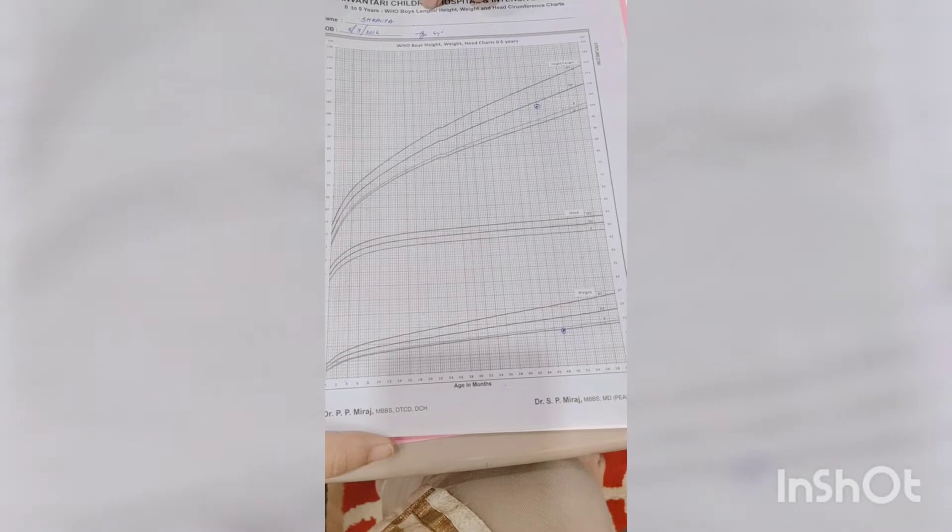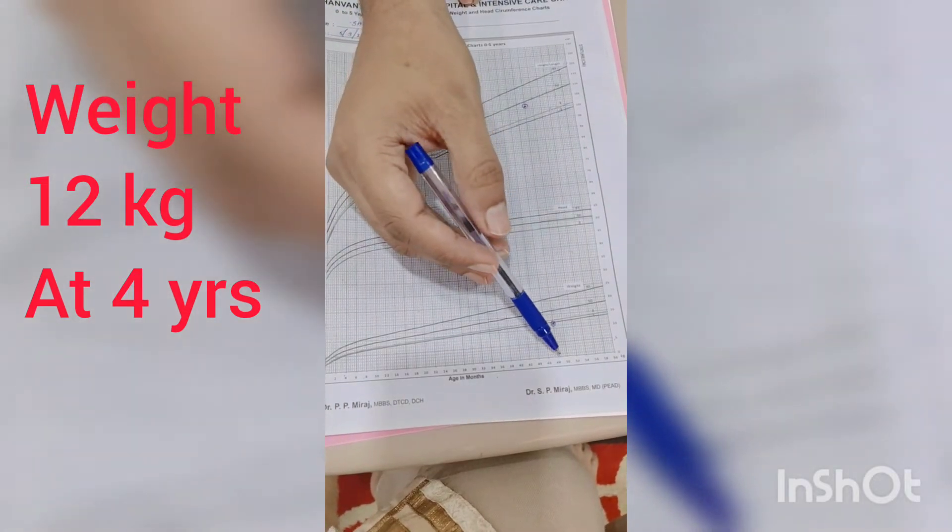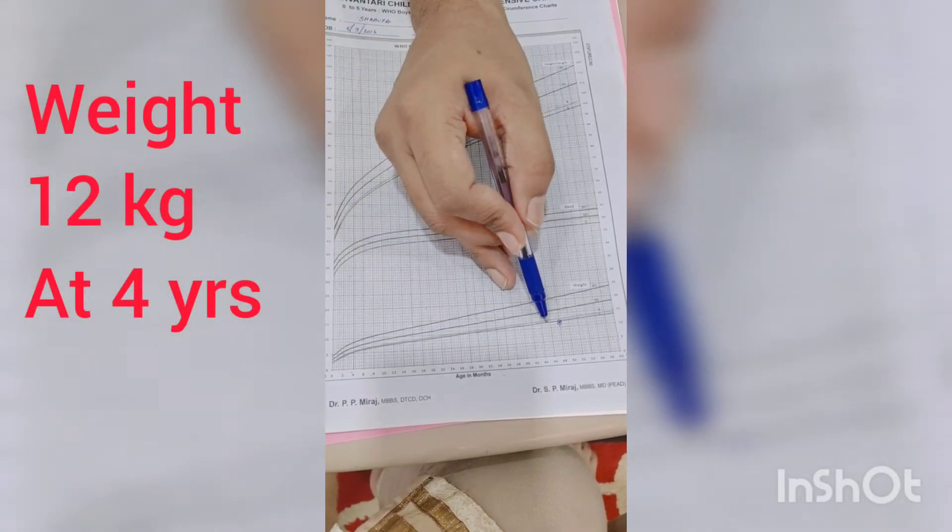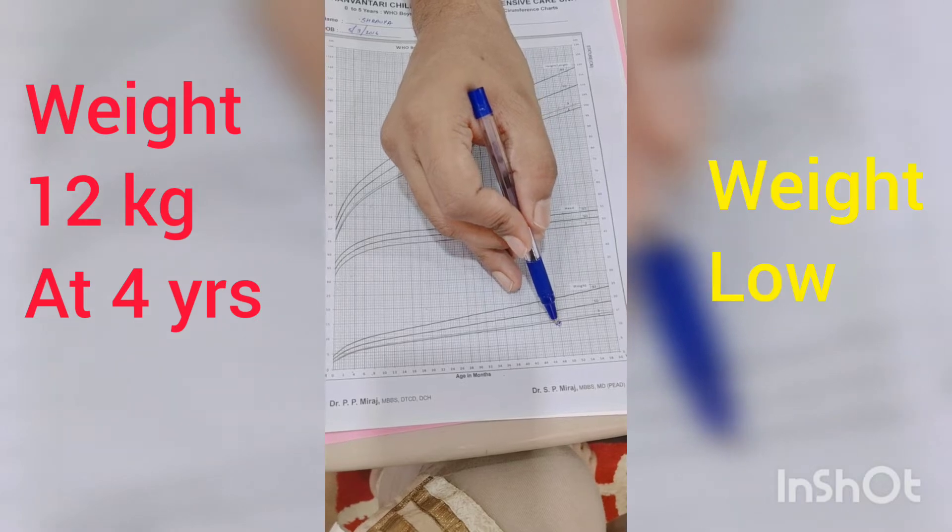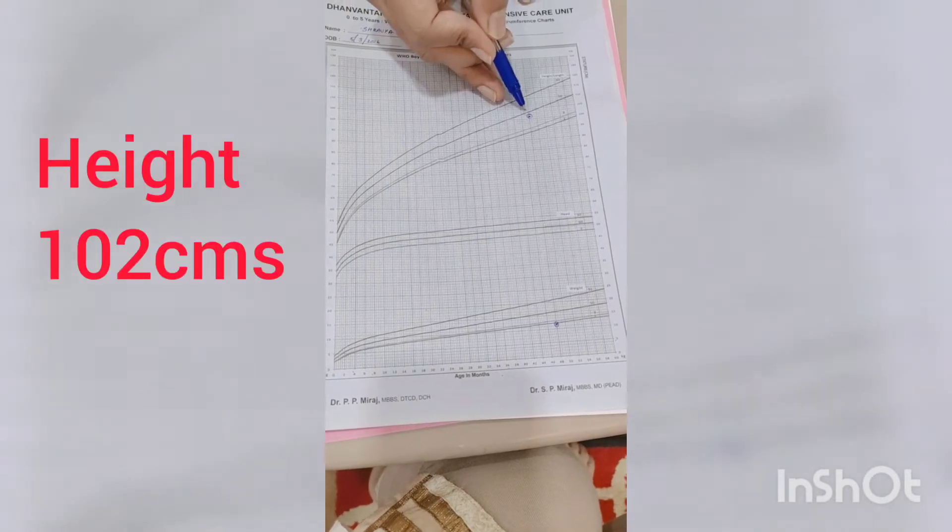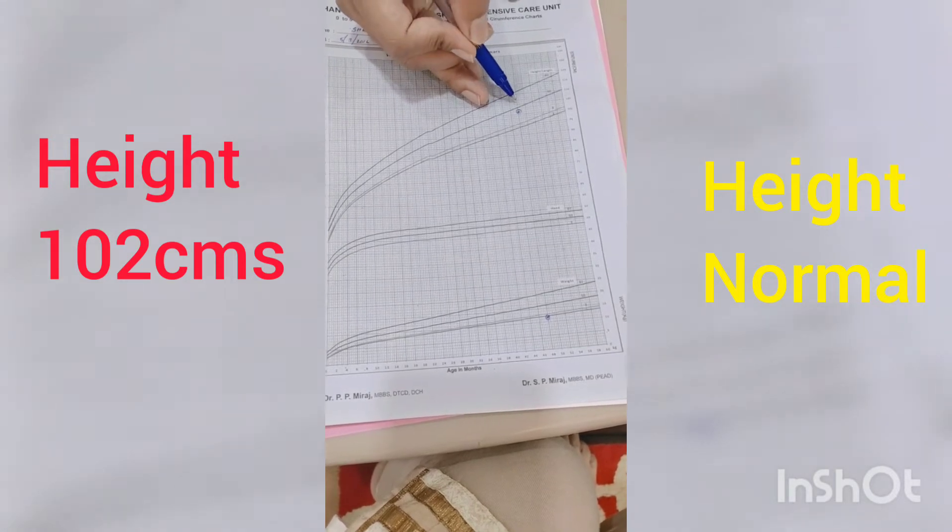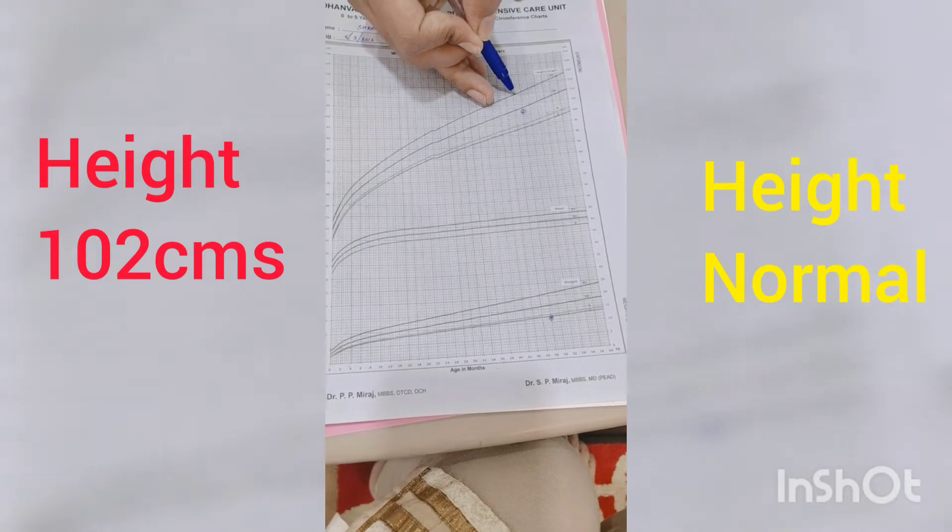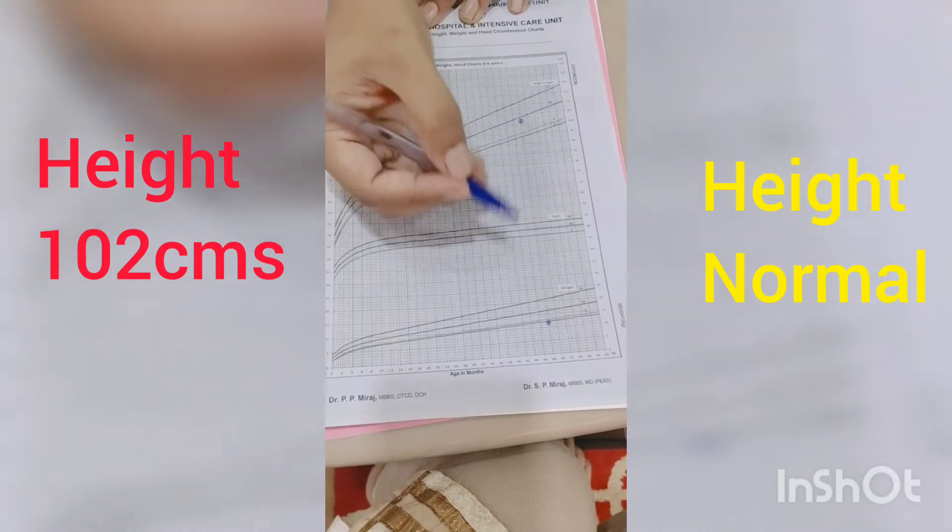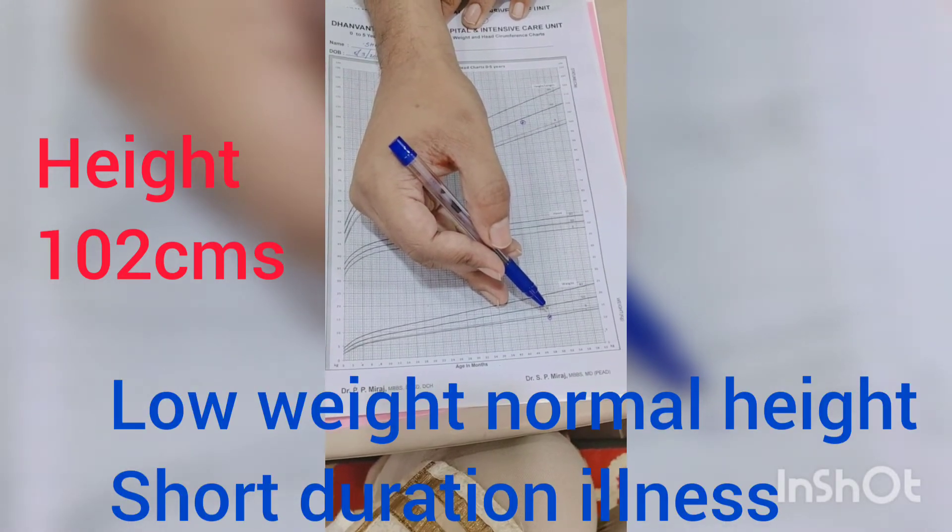Now, a very important third example. Please focus. This is Shravia, a four-year-old girl at 48 months. Her weight is 12 kg. When we plot this, we find she is below the last line, which means her weight is less. We also plotted her height, which is 102 centimeters, well within normal limits. If somebody falls at the 50th percentile, they are okay. Above the 90th percentile is high, below is low. These are the upper and lower margins. Shravia's height is fine, yet her weight is significantly less, which means something has gone wrong acutely.